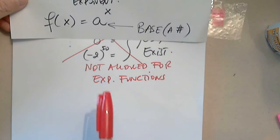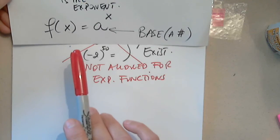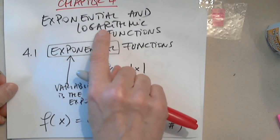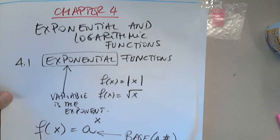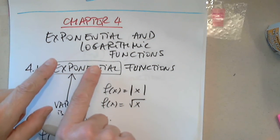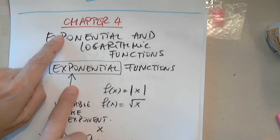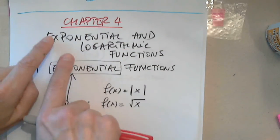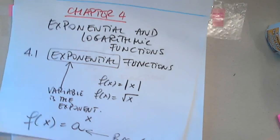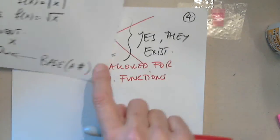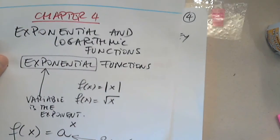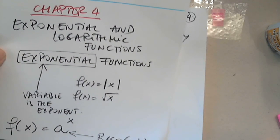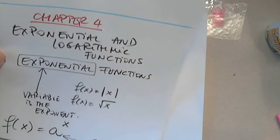If you're anxious to know why, here's the short answer: the other function — the logarithm — will not exist. The exponential is the inverse function of the log, and the log is the inverse function of the exponential. So if we allow a base of 1, 0, or a negative number in an exponential function, the logarithmic function collapses and doesn't exist.